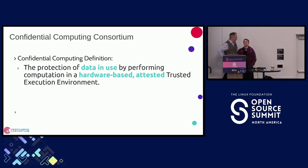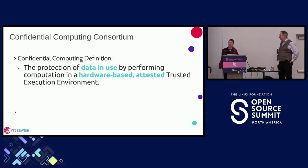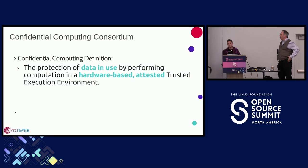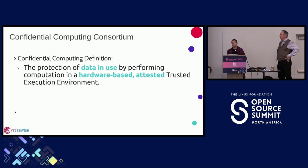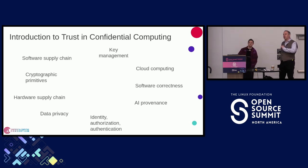Today we want to parse apart why we use this specific definition, what it means on a technical level, and why this technical definition is so important to have embedded in the conversation around open source. We want to explain what it really means when we say that confidential computing is the protection of data in use by performing computation in a hardware-based, attested, trusted execution environment. This definition, simple as it looks, took six months for our Technical Advisory Committee to agree on.